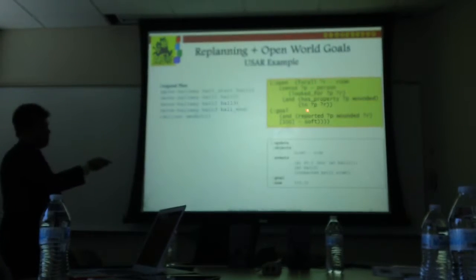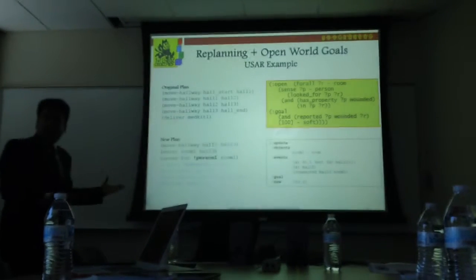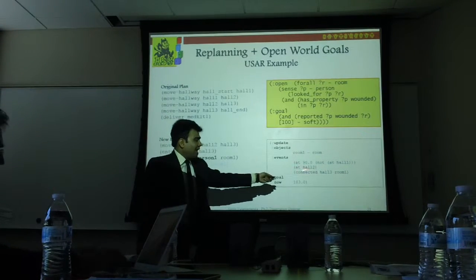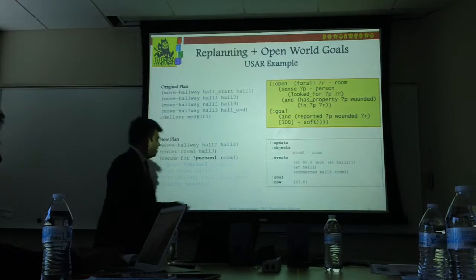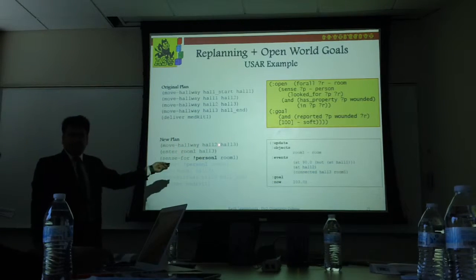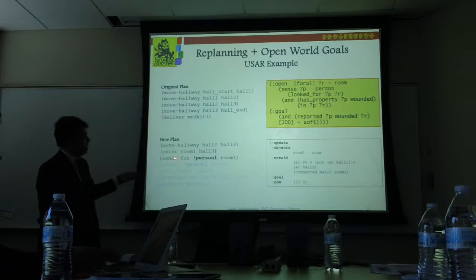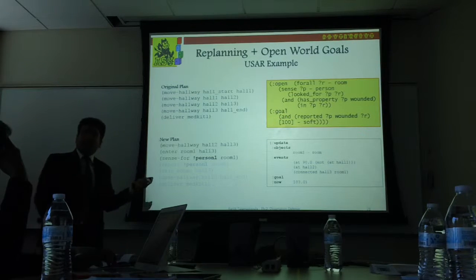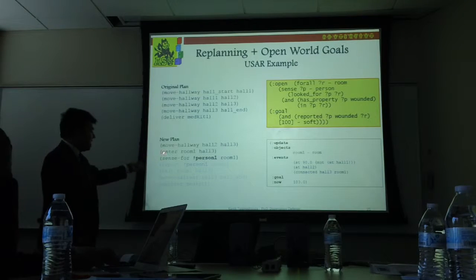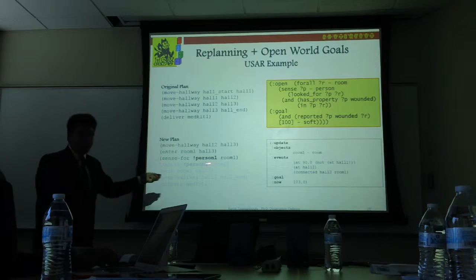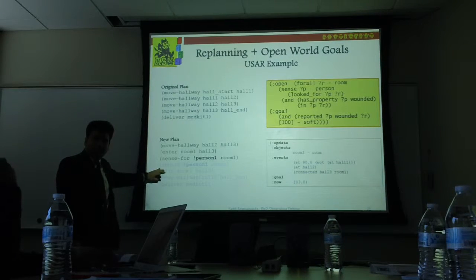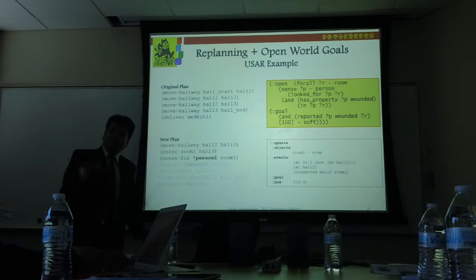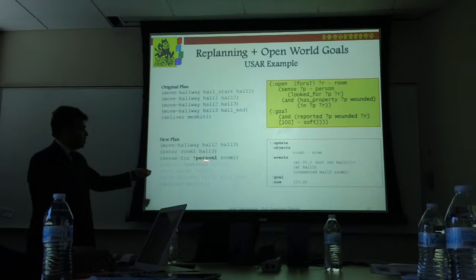The planner takes the open-world quantified goal and the state update together and replans, coming up with a new plan. Because the update says the robot is at hallway 2, the plan starts from there — move from hallway 2 to hallway 3, then enter the room. The robot creates a plan to go in and sense for an injured person. The remaining actions are grayed out because this is a sensing action.